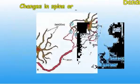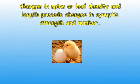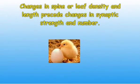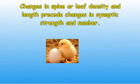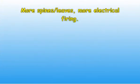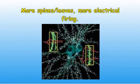In a recent study, Professor John Armstrong found that changes in spine or leaf density and length precede changes in synaptic strength and number. This confirms the importance of the spines or leaves in being required for synapse development. Generally speaking, the more dendritic spines there are on a dendrite, the more electrical activity and firing rates there are. However, many questions remain unanswered.